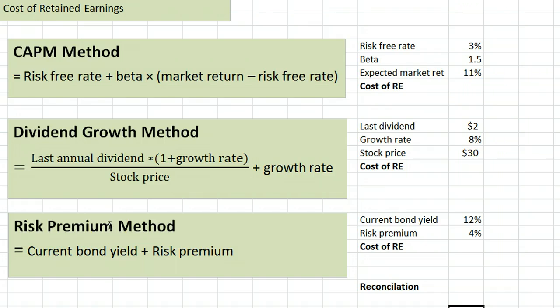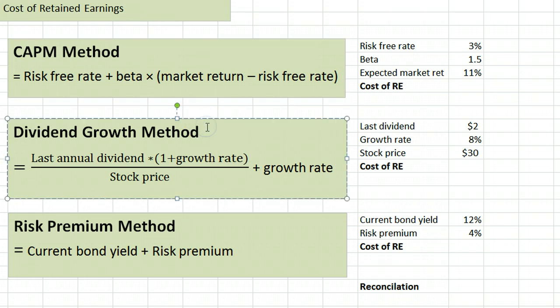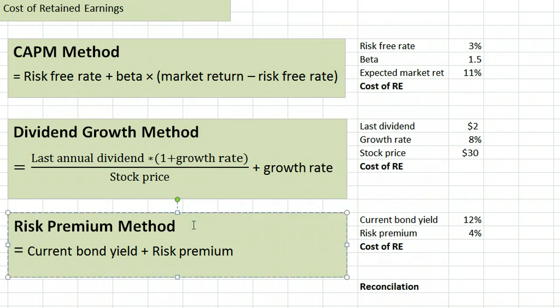One of the steps in calculating a firm's weighted average cost of capital is to calculate the cost of retained earnings, and there are three methods of doing that: the CAPM method, the dividend growth method, and the risk premium method.